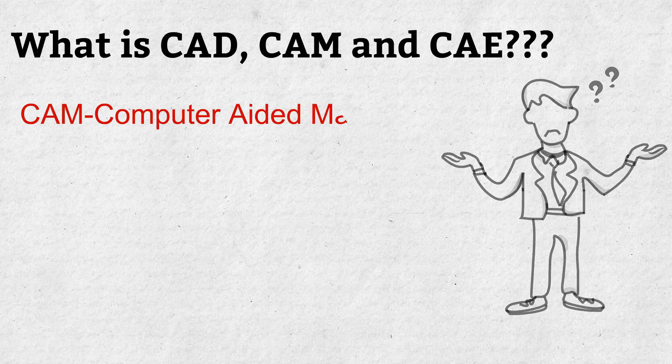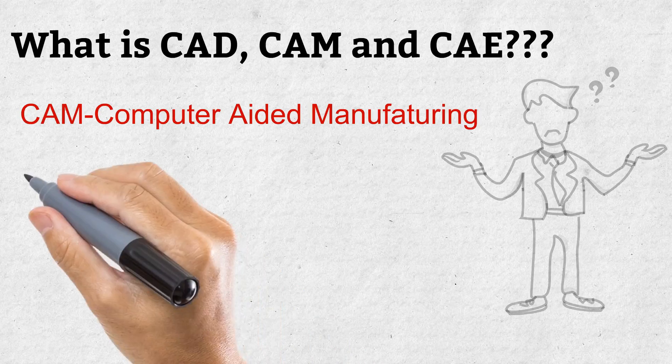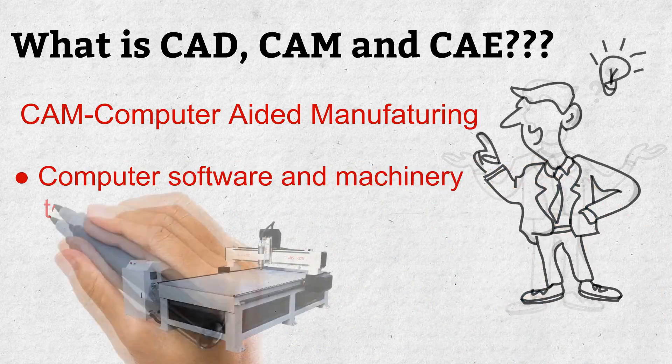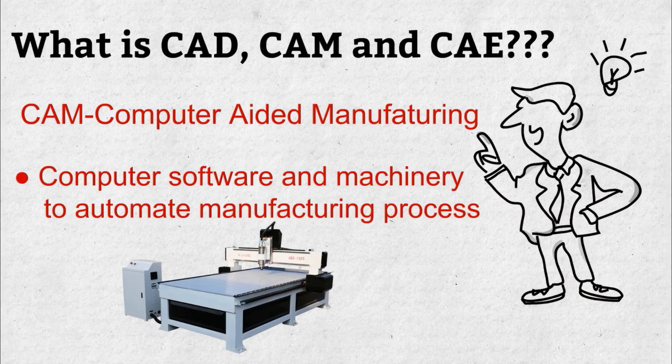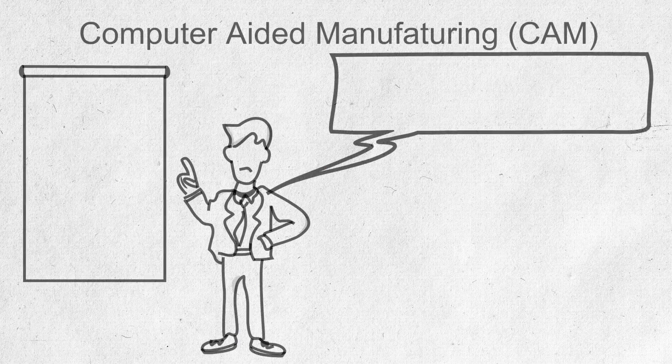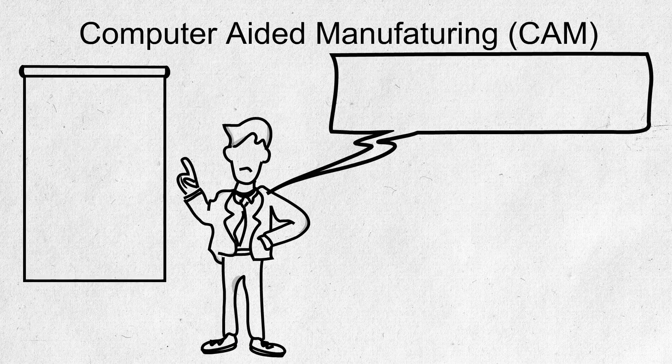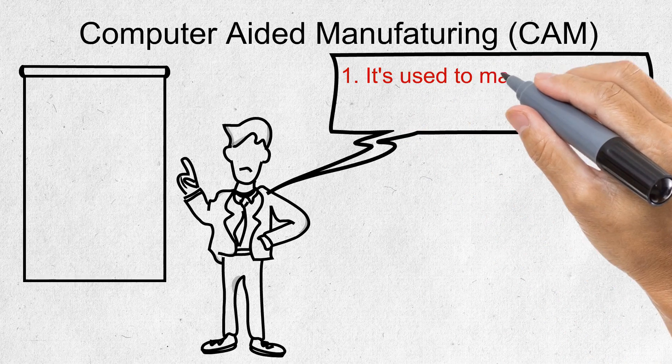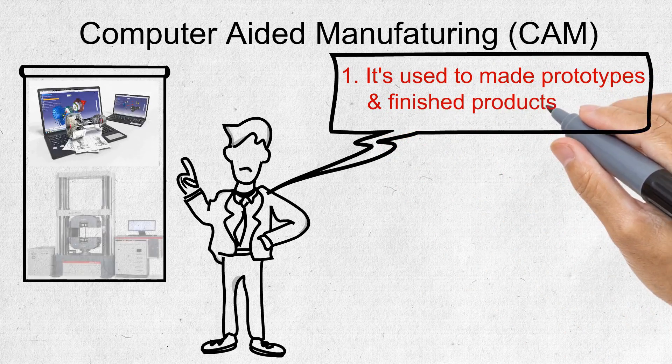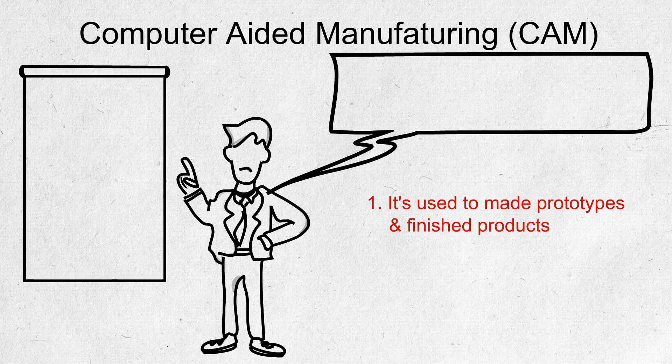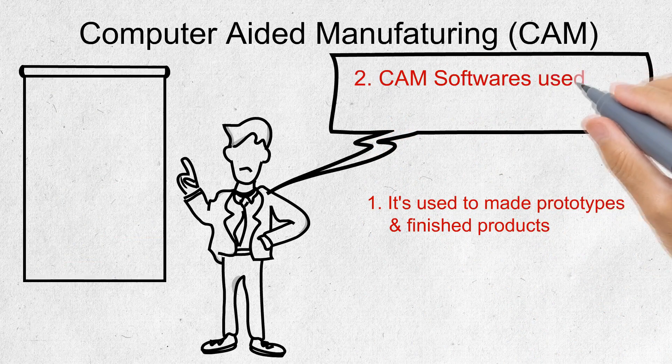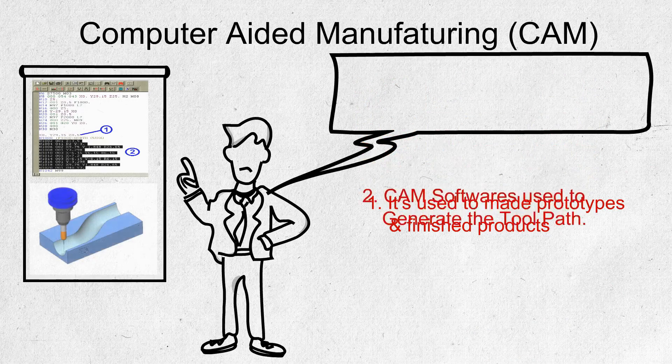Finally, CAM, Computer Aided Manufacturing. CAM is an application technology that uses computer software and machinery to automate manufacturing processes. CAM software is used to design and manufacture prototypes, finished products, and production runs. Software that tells a machine how to make a product by generating tool paths.